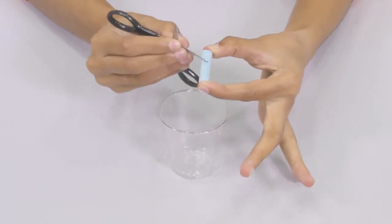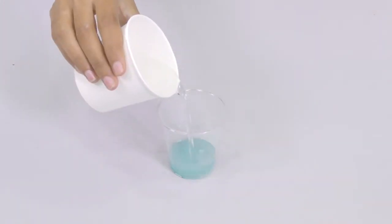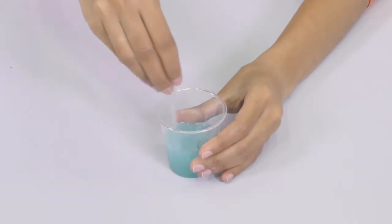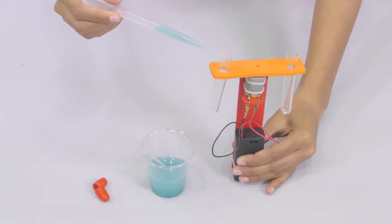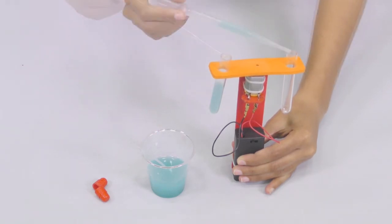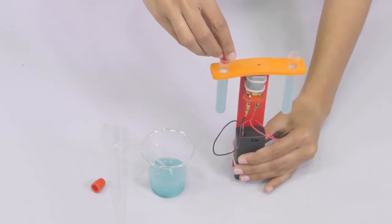Scrape some chalk powder into a cup using scissors. Prepare a mixture of chalk powder and water. Next, using a dropper, fill about 3 fourths of each test tube with the mixture. After filling, close the tubes with their caps.